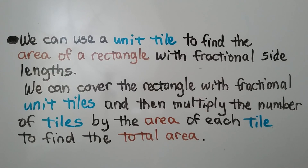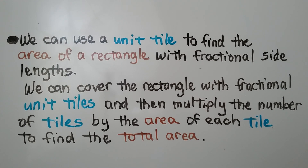We can use a unit tile to find the area of a rectangle with fractional side lengths. We can cover the rectangle with fractional unit tiles and then multiply the number of tiles by the area of each tile to find the total area.